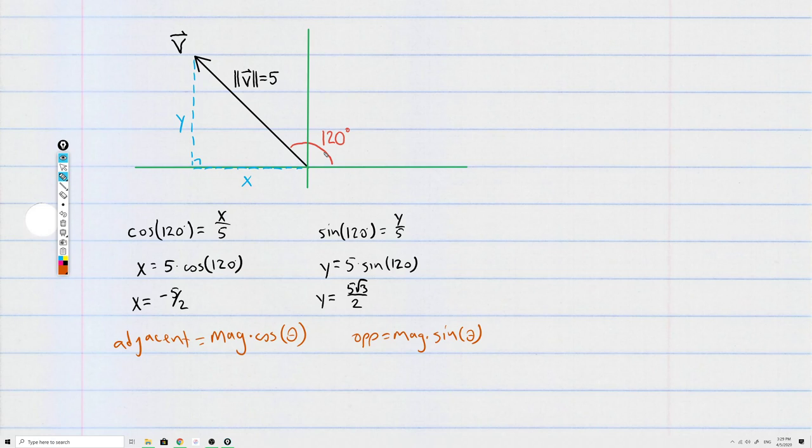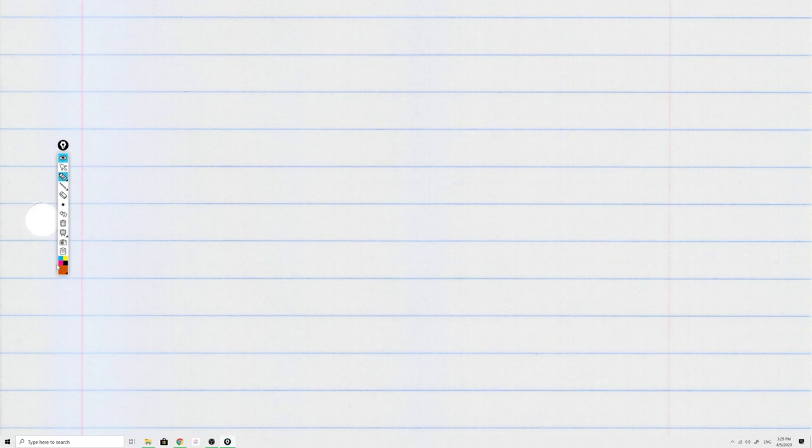Now that's basically it when it comes to component form of a vector and getting that from polar form. But I want to show you a little trick that you do have to be careful when you're using.